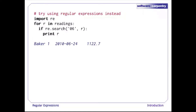Let's try using a regular expression to do our matches instead of the simple string 'in' operator. We import the regular expressions library and then say: for each record, if re.search can find a match for the string '06' in the record, then we'll print it out. So far this is matching exactly what '06 in r' would match — it's not much of an improvement.